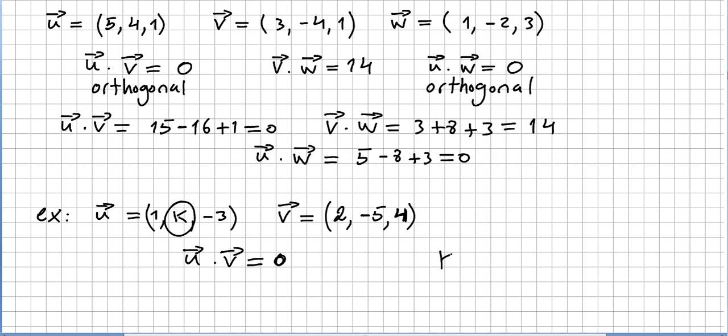If you do the calculations, you're going to get k equal minus 2. If k is minus 2, then this is orthogonal. Quick checking: 1 times 2 you get 2, if this k is minus 2 you are going to get 10, that's 12, minus 3 times 4 is minus 12, and you get zero. And this is the only value that allows u and v to be orthogonal.